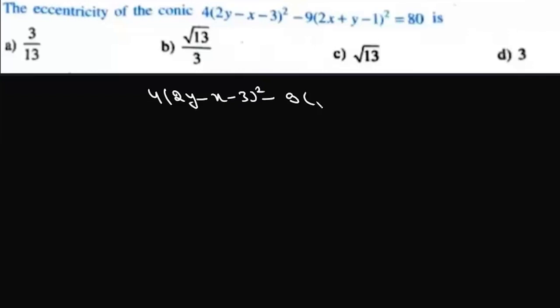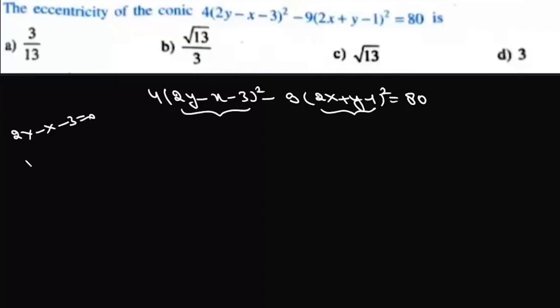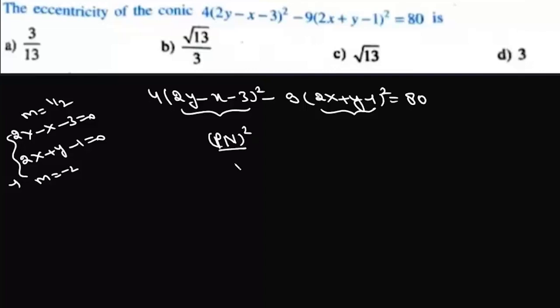Another example: find the eccentricity of the conic 4(2y - x - 3)² - 9(2x + y - 1)² = 80. Looking at the two lines: slope of 2y - x - 3 = 0 is 1/2 and slope of 2x + y - 1 = 0 is -2, so they are perpendicular. This is therefore a hyperbola, and we write it in the form PN²/a² - PM²/b² = 1.